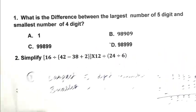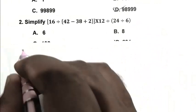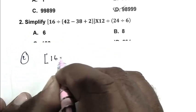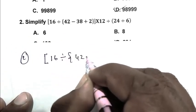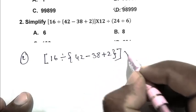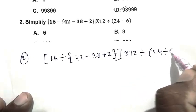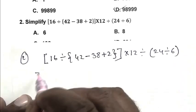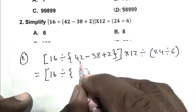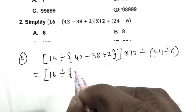Question number two: Simplify [16 ÷ (42 - 38 + 2)] × 12 ÷ (24 ÷ 6). So friend, we can write it as 16 divided by, first we calculate this, 42 minus 38 is 4, we add 2, we get 6.